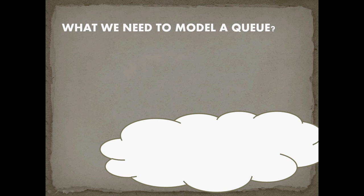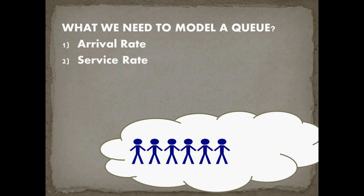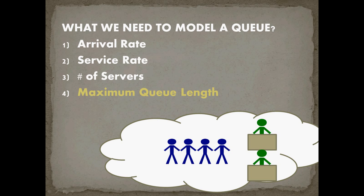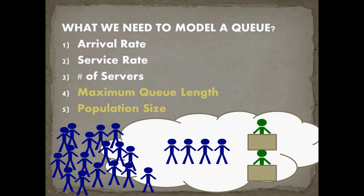What do we need to model a queue? The first thing we need is the arrival rate — how fast are customers going to show up? The second is the service rate — how fast can my server handle customers? The third is the number of servers: one, two, three, or four. Optionally, we can include a maximum queue length — if I can only fit four customers in my store, I lose all customers beyond four. We can also include population size, since a small population already in line will affect future arrival rates. The required elements are arrival rate, service rate, and number of servers; optional elements are maximum queue length and population size.